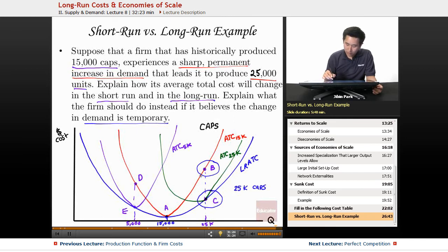then they should operate the business assuming that they're going to go back down to its 15,000, which is the historically consistent mark that they've been producing. So if this is just a temporary spike in demand, then it doesn't make sense to adjust here to this point of making 25,000.